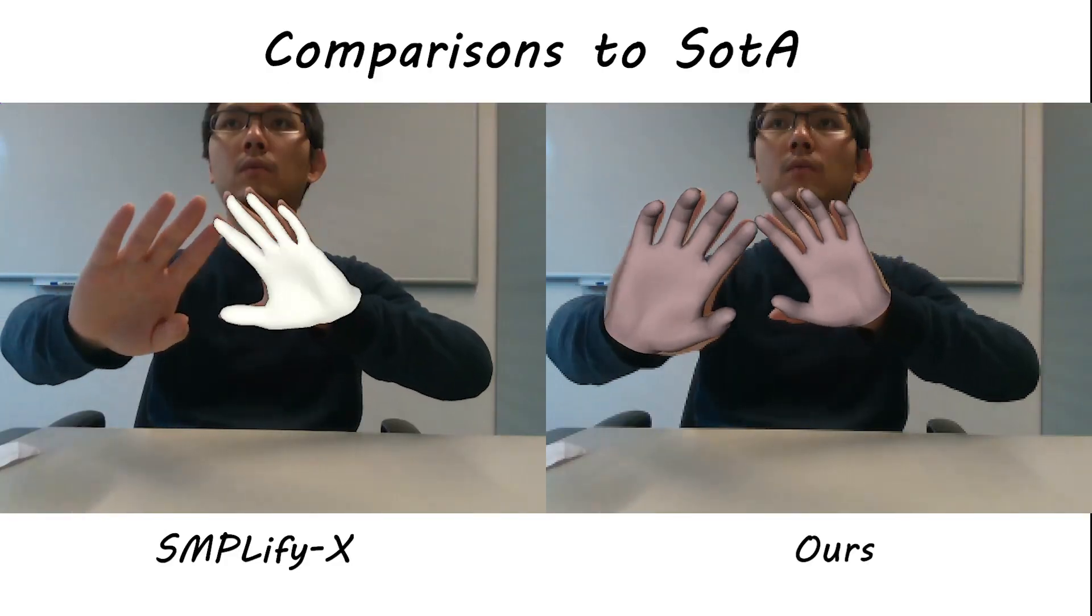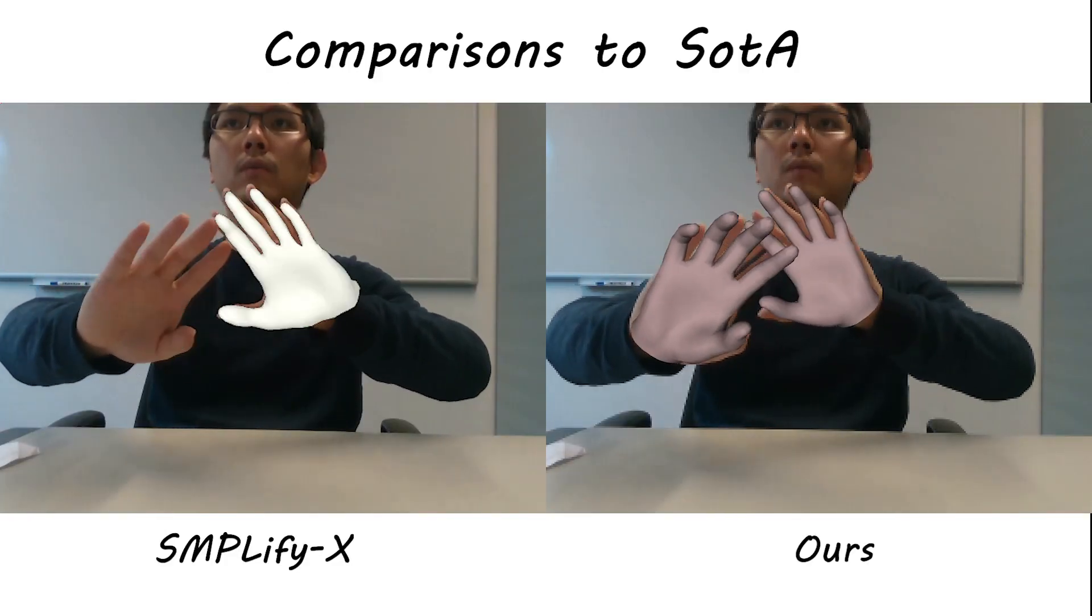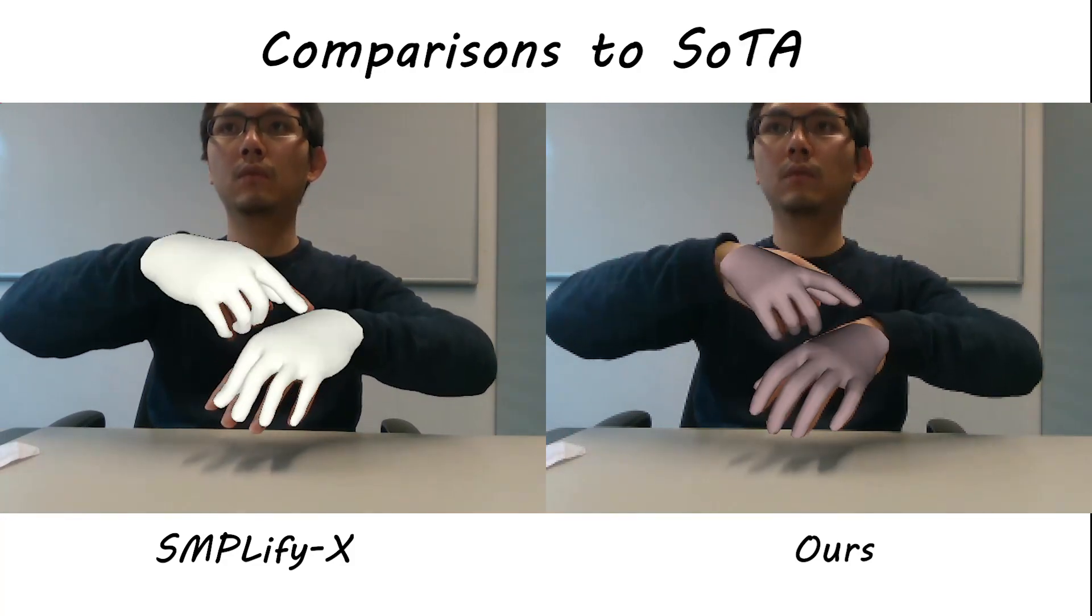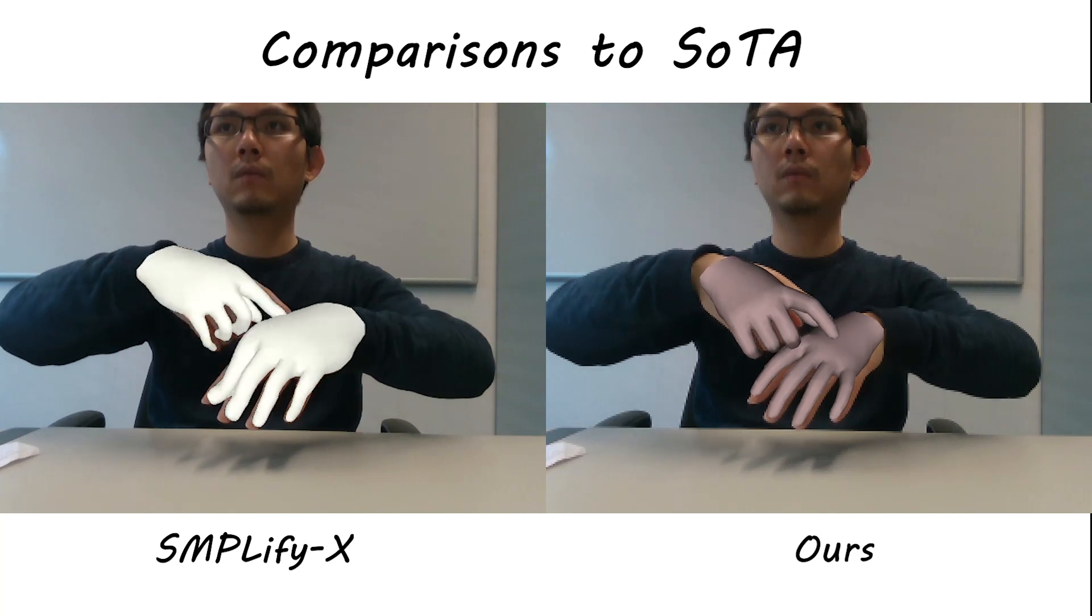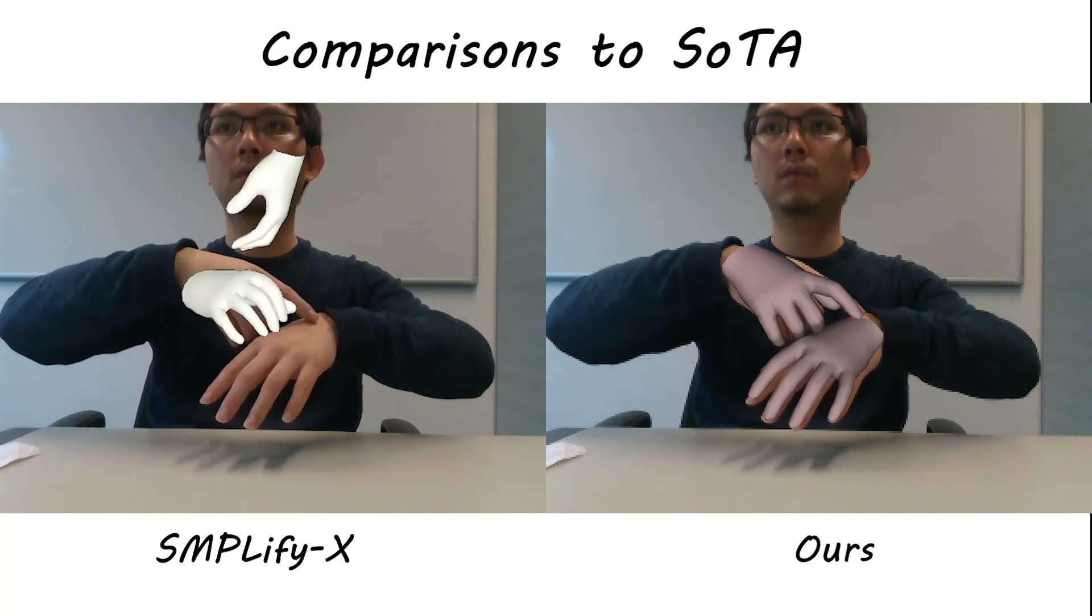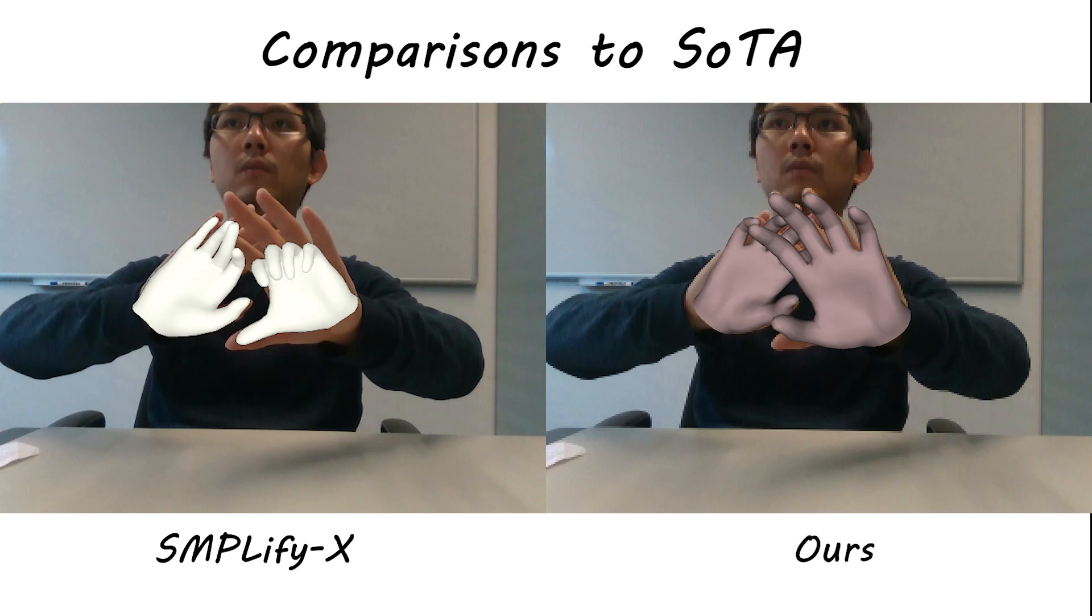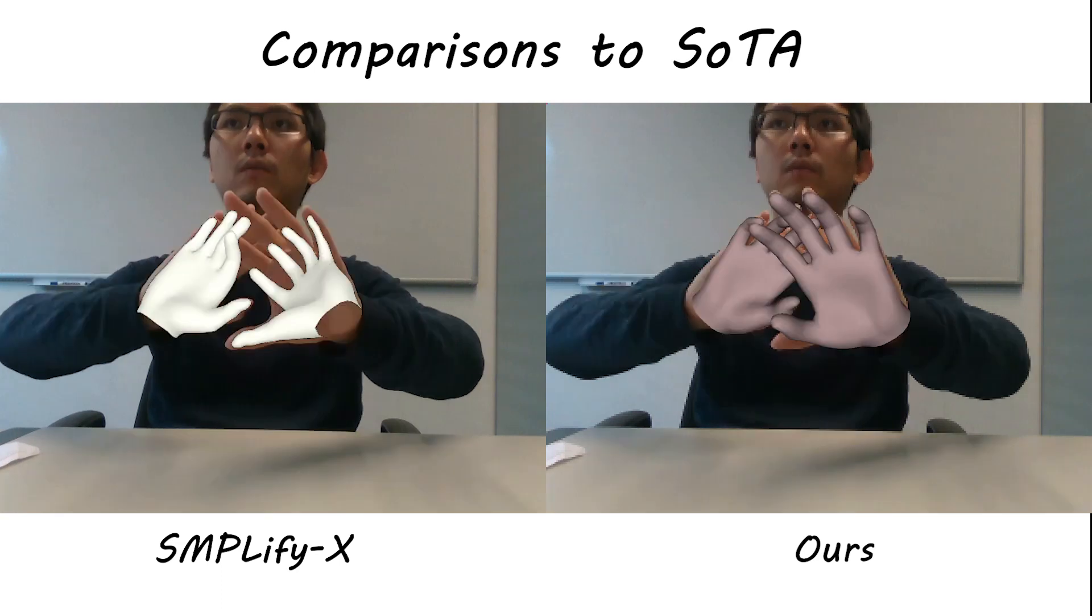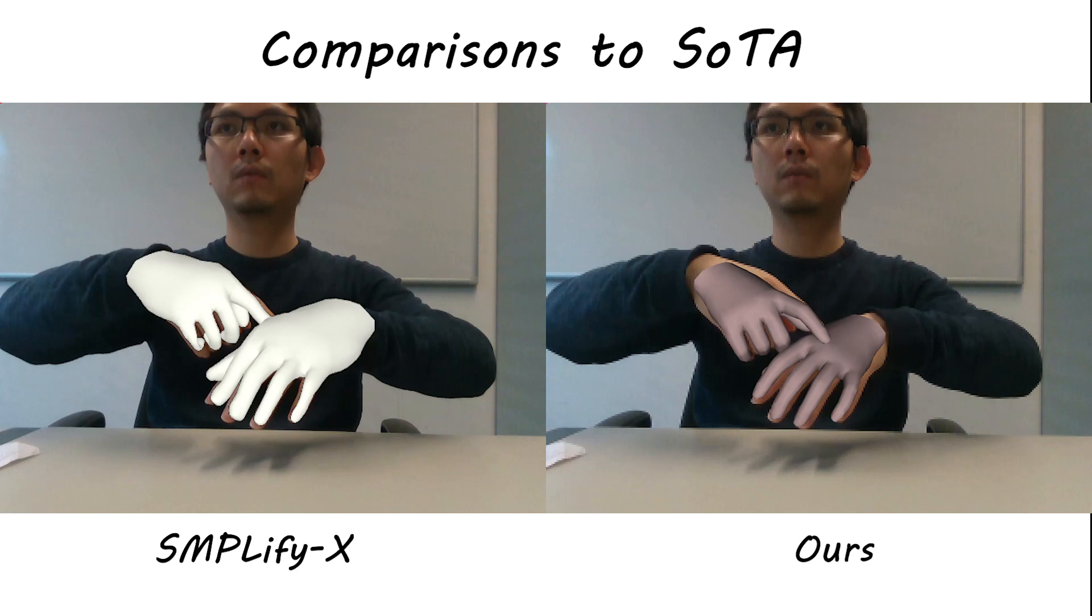Methods that reconstruct the entire human body, such as SimplifyX, implicitly rely on the body pose to detect the hand and to regularize the hand orientation. As such, our method is more stable when the body is not fully visible. SimplifyX also does not explicitly address overlapping hands and thus fails even when the hand detection and orientations are correct.